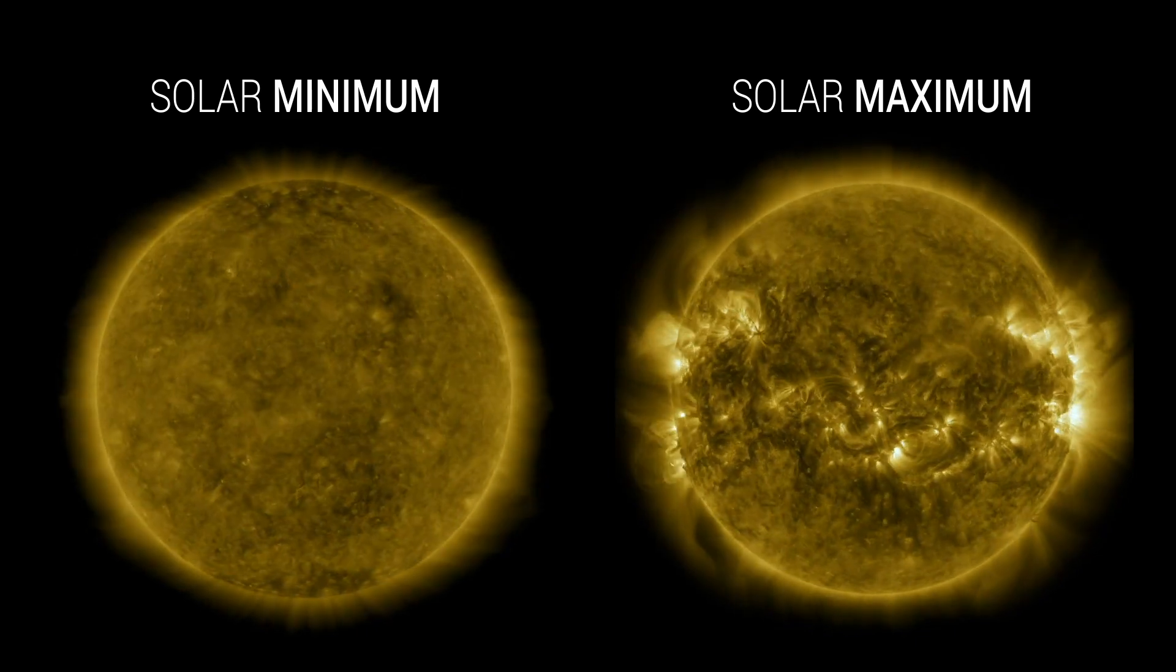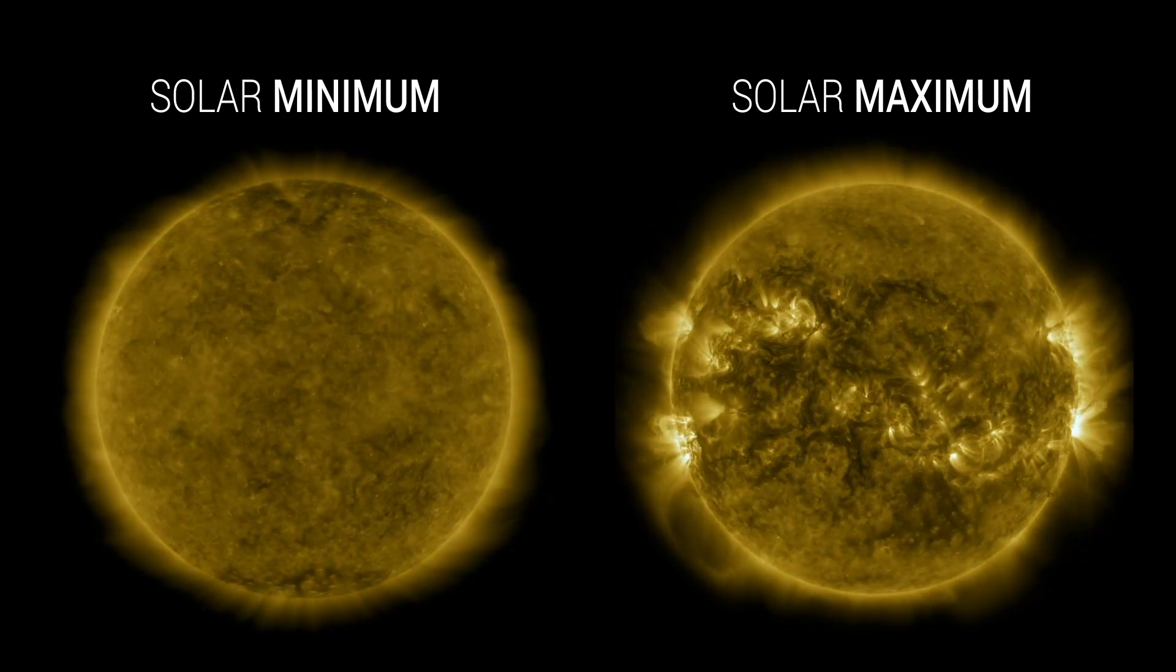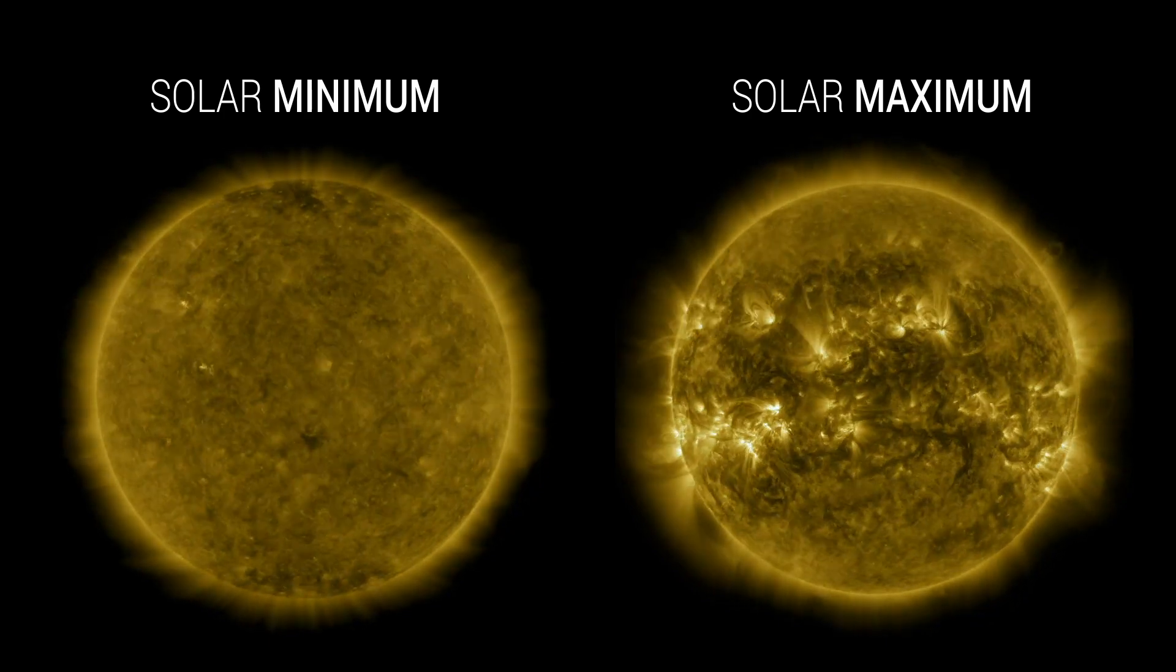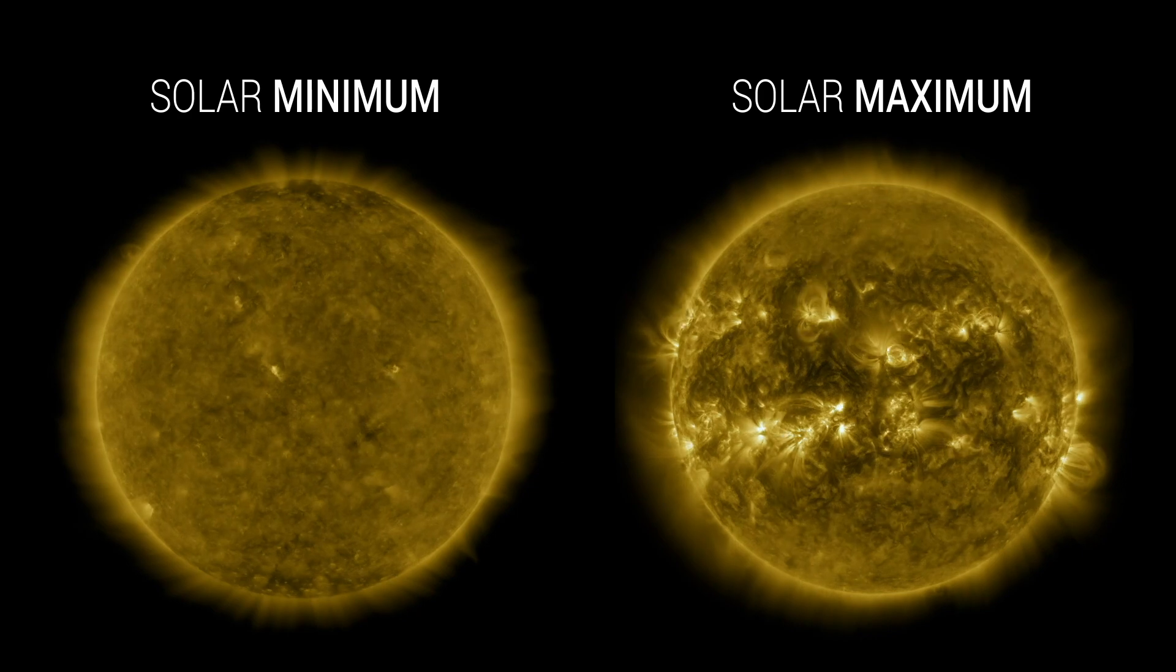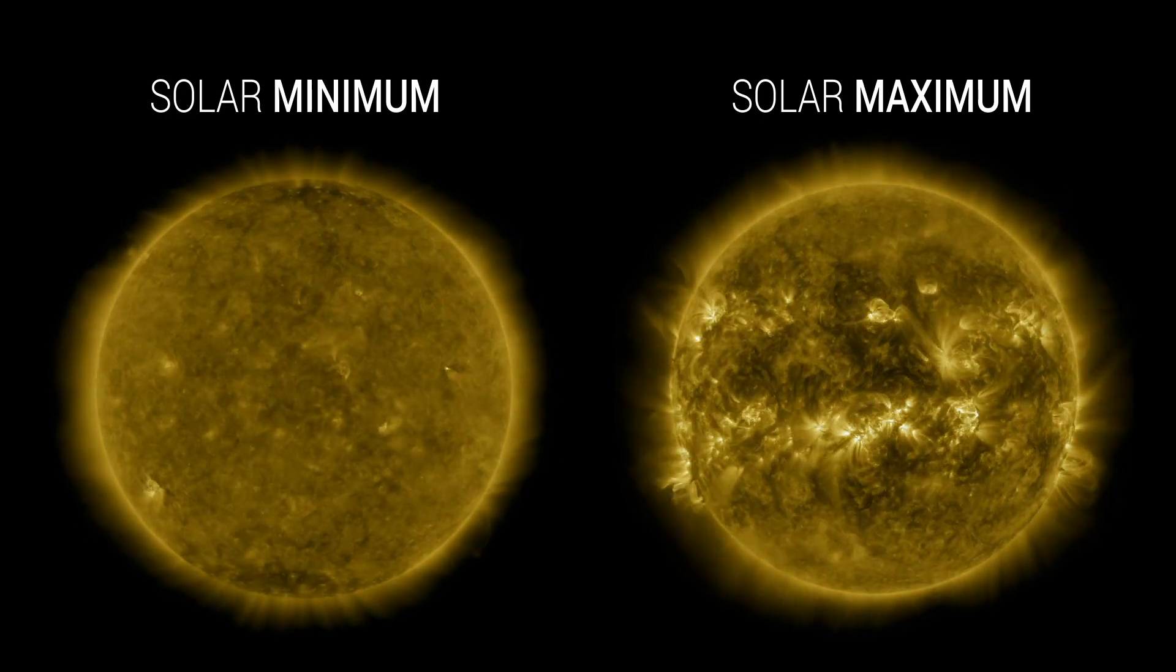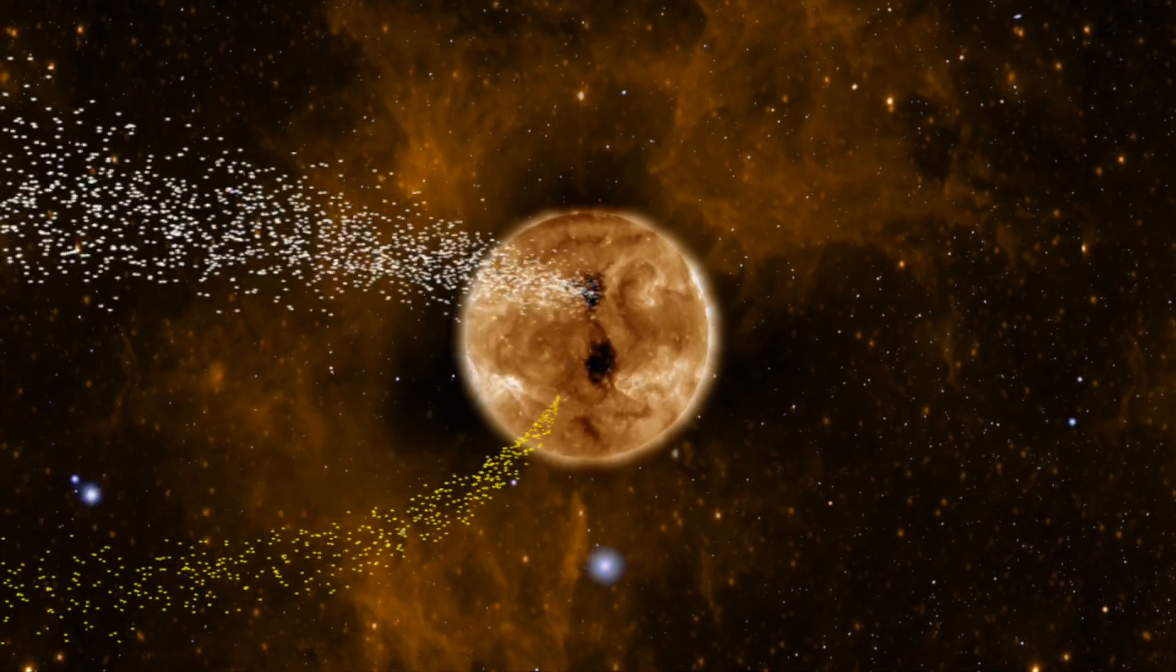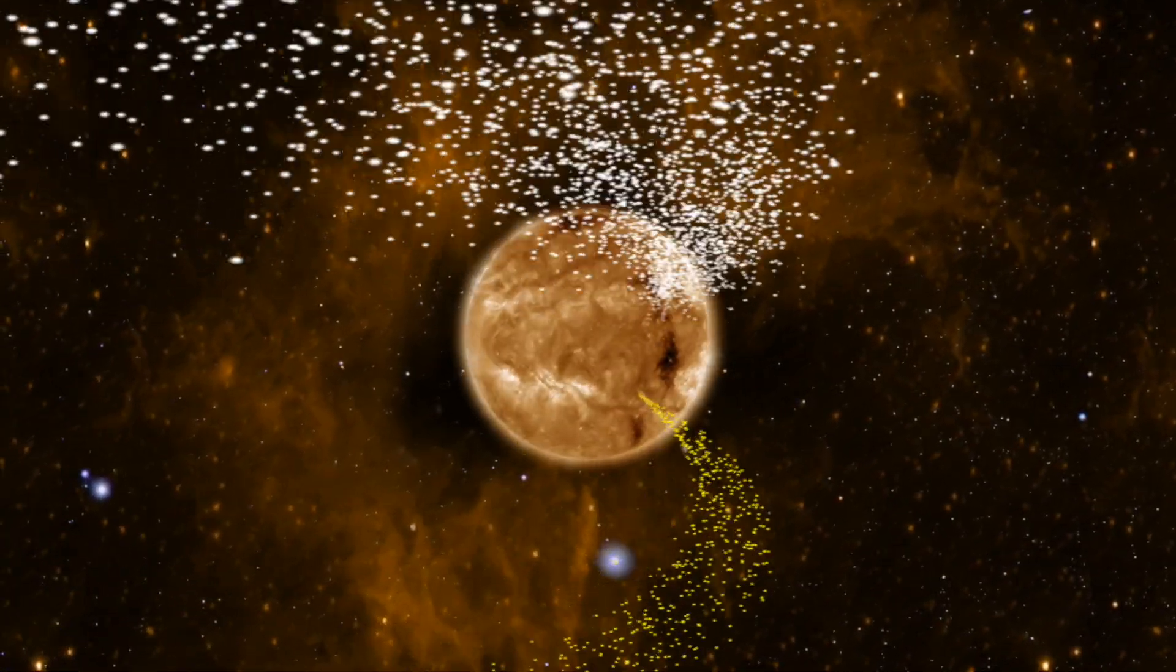In our previous space weather lessons we went over the difference between sunspot maximum and sunspot minimum and the solar magnetic reversal that causes it. We also went over how it triggers those sunspots to appear as well as the low-latitude coronal holes and what the difference between the coronal holes and the sunspots are.